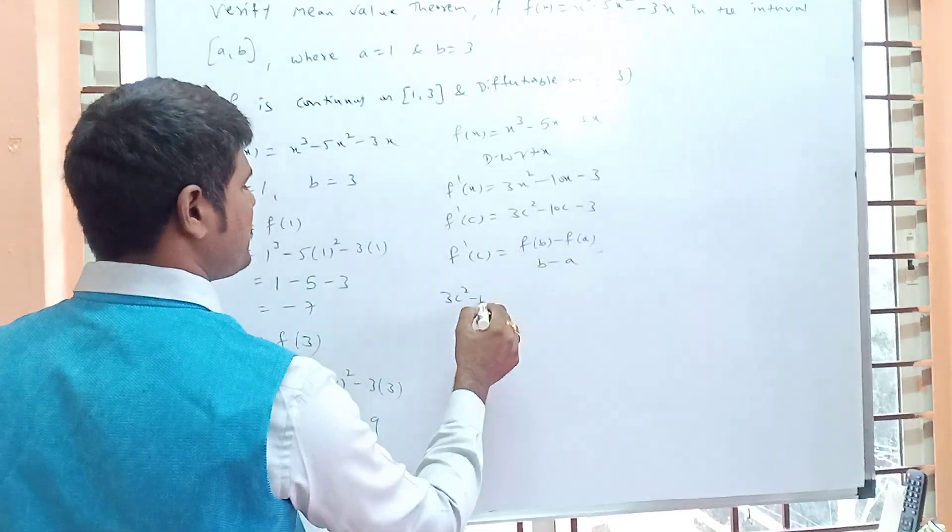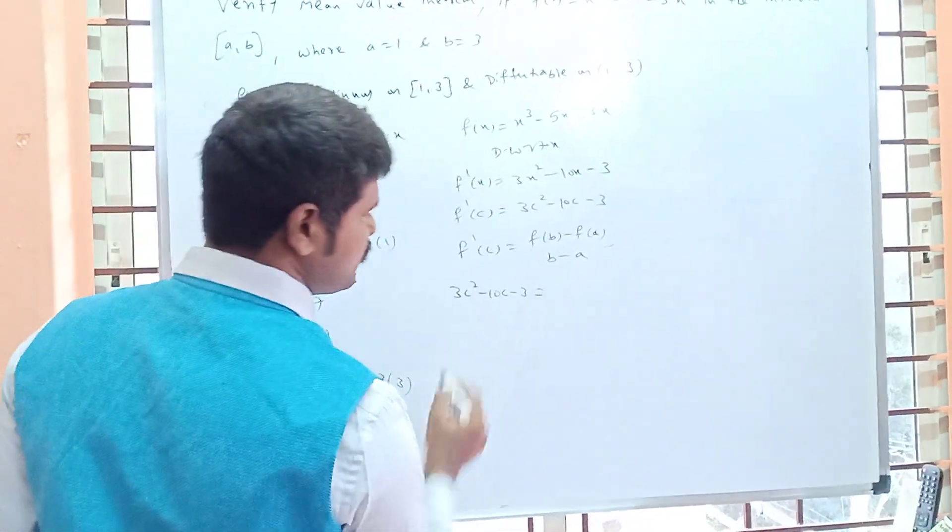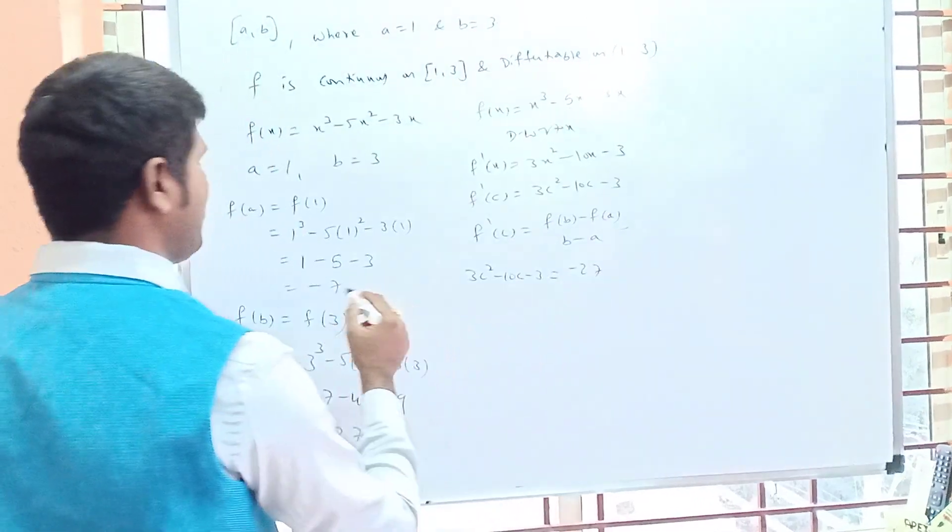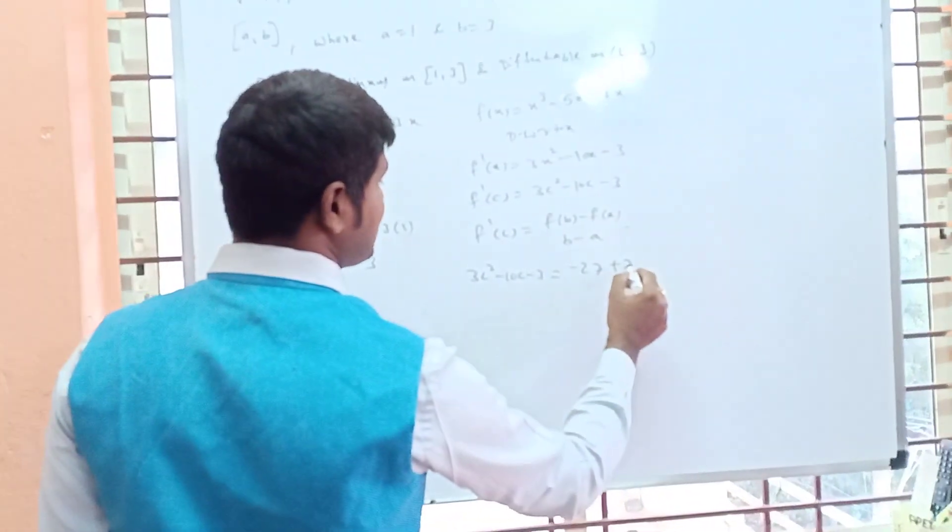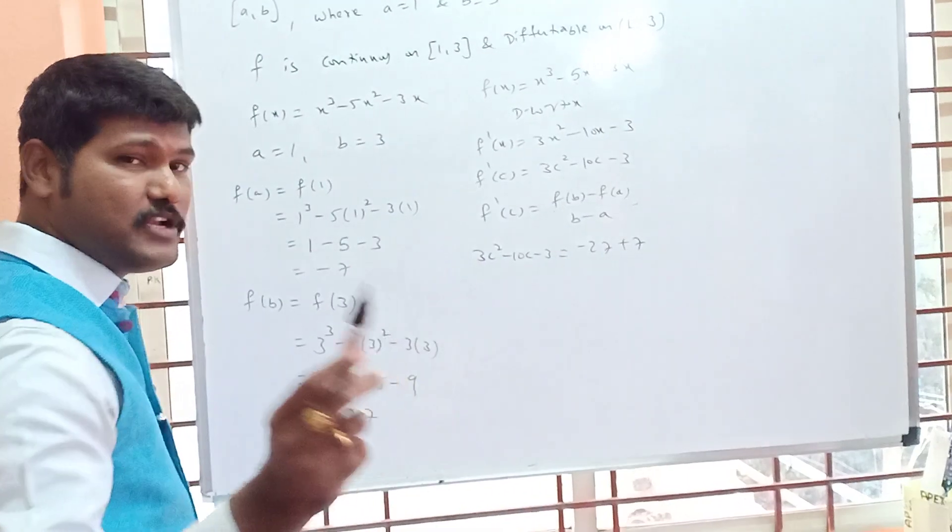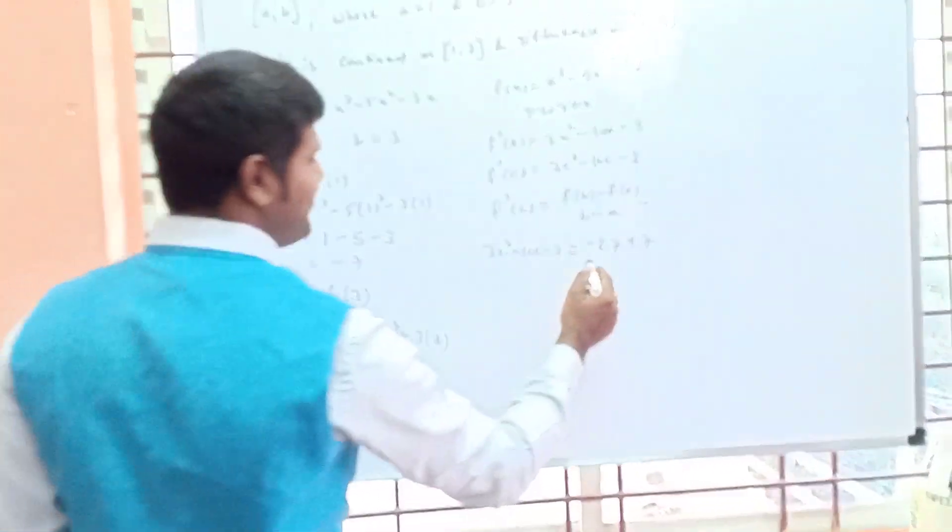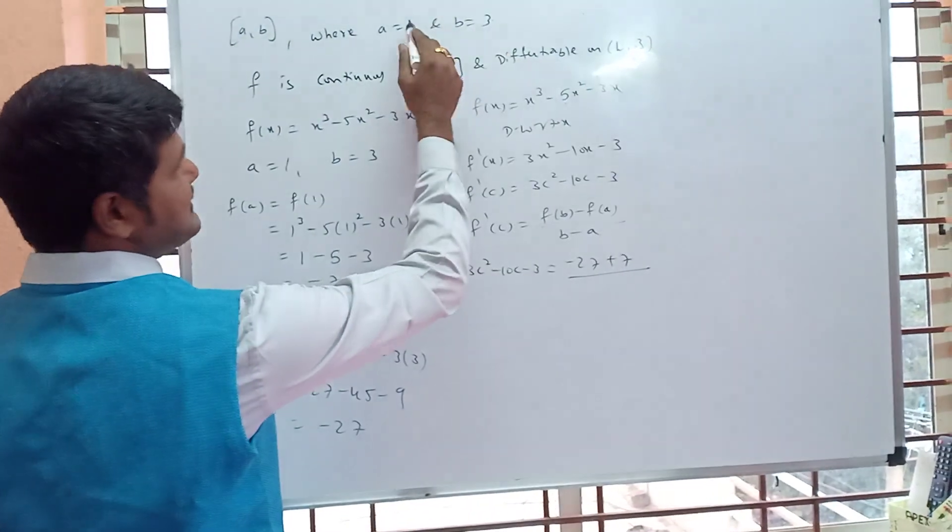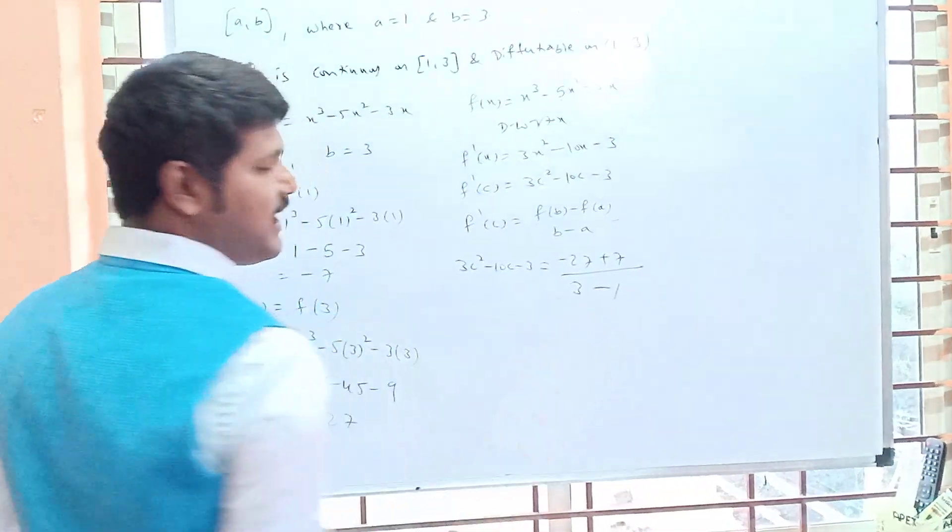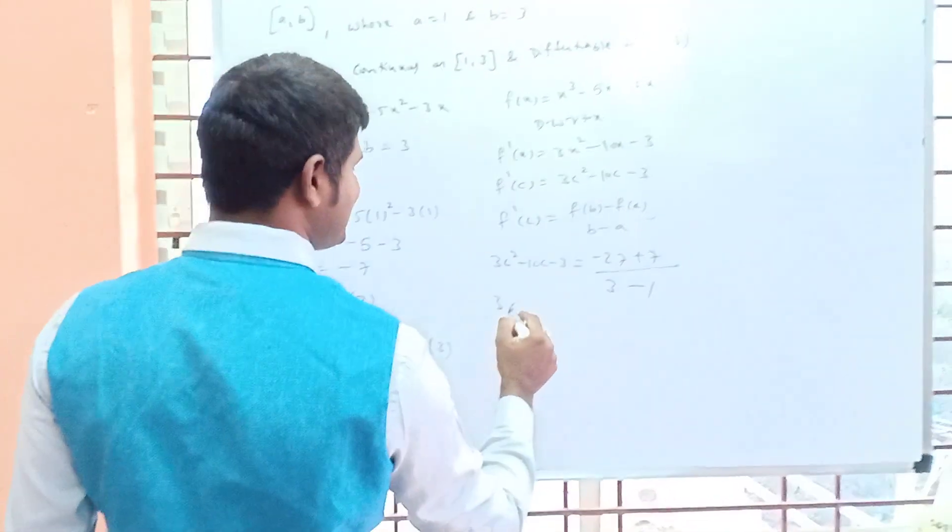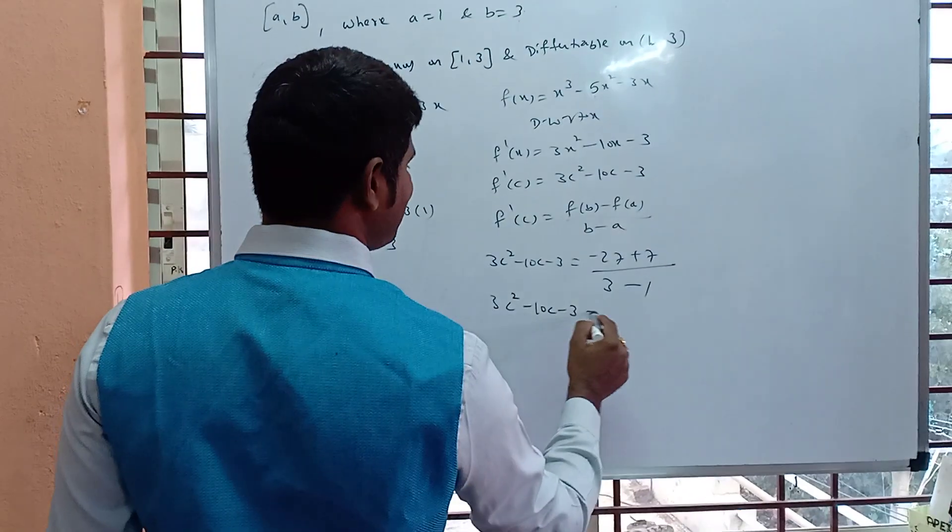That means 3c² - 10c - 3 equals: what is f(b) value? -27. f(a) value: minus of minus plus 7. When you are substituting values only, generally you are doing mistakes. Minus of minus is plus, by denominator b - a, 3 - 1. Think fast, some will add 1 - 3, so be careful.